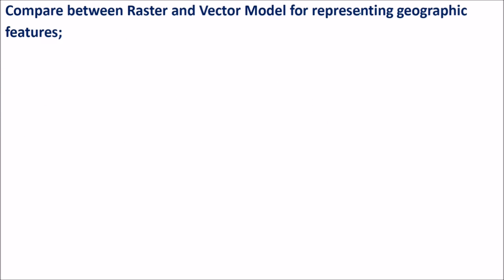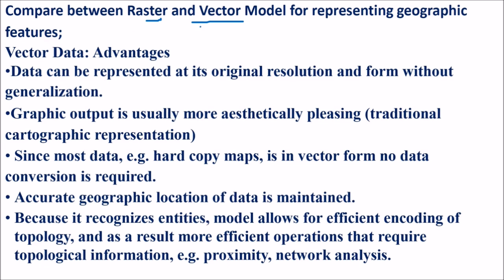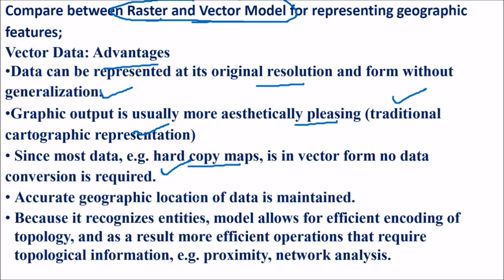Compare raster and vector models for representing geographic features. These are the data structures for GIS and together they combine to form spatial data. Advantages of vector data: data can be represented at its original resolution without generalization; graphic output is aesthetically pleasing representing traditional cartographic representation; since most hardcopy maps are in vector form, no data conversion may be required; accurate geographic location of data is maintained; and the model allows efficient encoding of topology, enabling proximity analysis and network analysis.